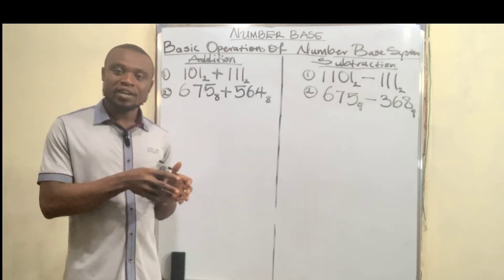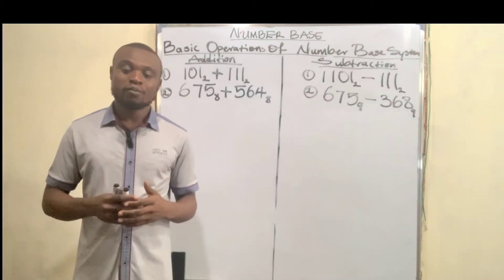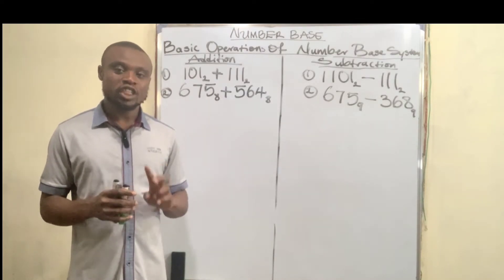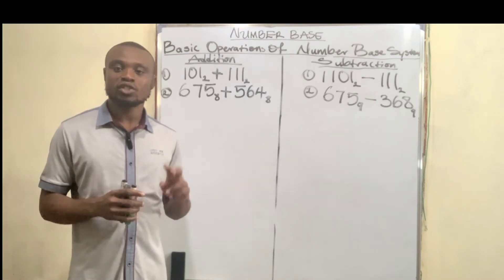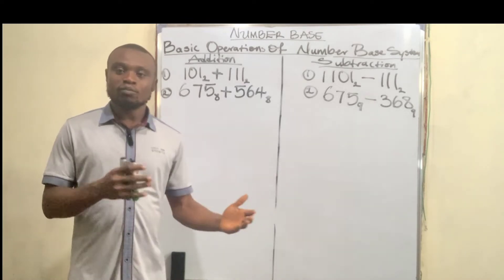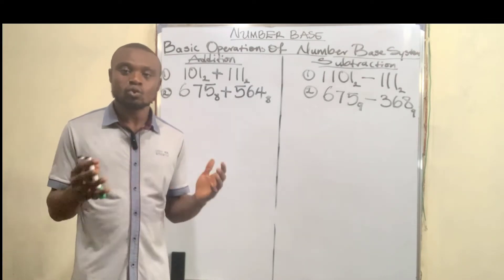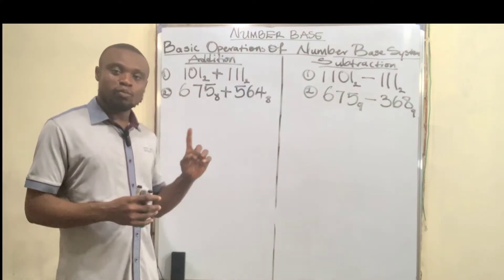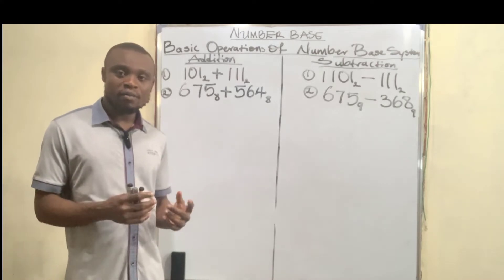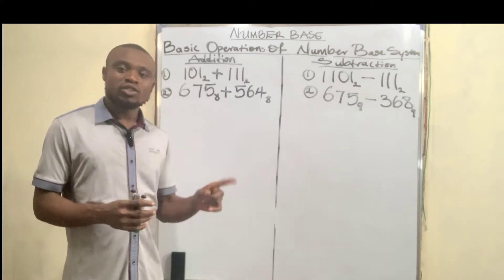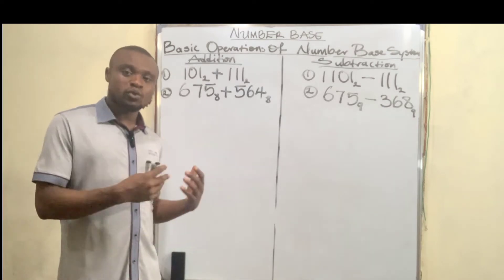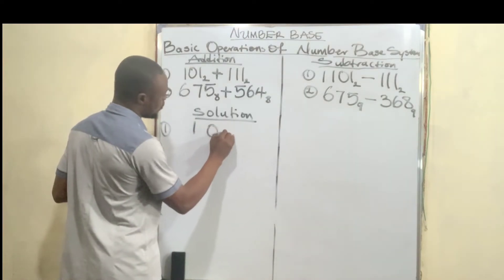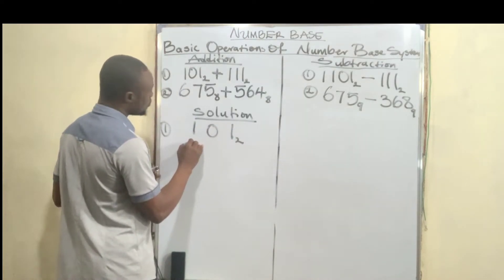The rules of addition in binary numbers: 1 base two plus 1 base two gives you 10 base two. So it's not like saying one plus one gives you two in ordinary terms — in binary it is 10. Then 10 plus 1 gives you 11 in binary, and 11 plus 1 gives you 100, which is four. So let's apply this now with the example on the board.